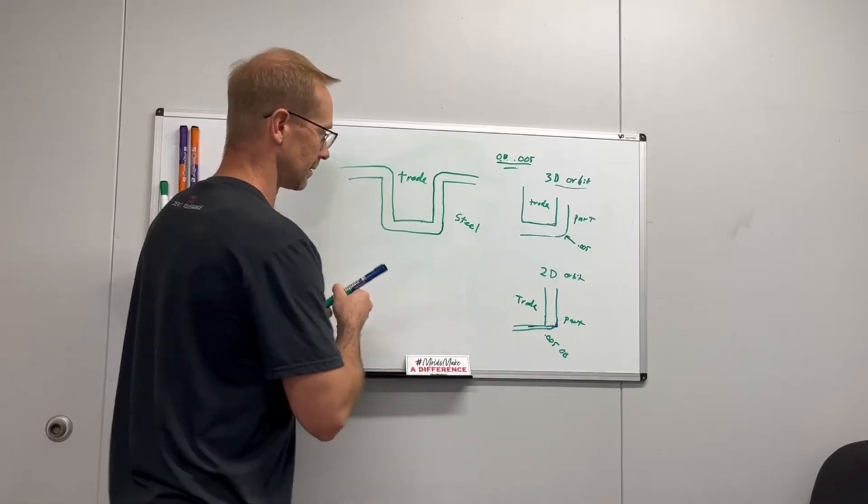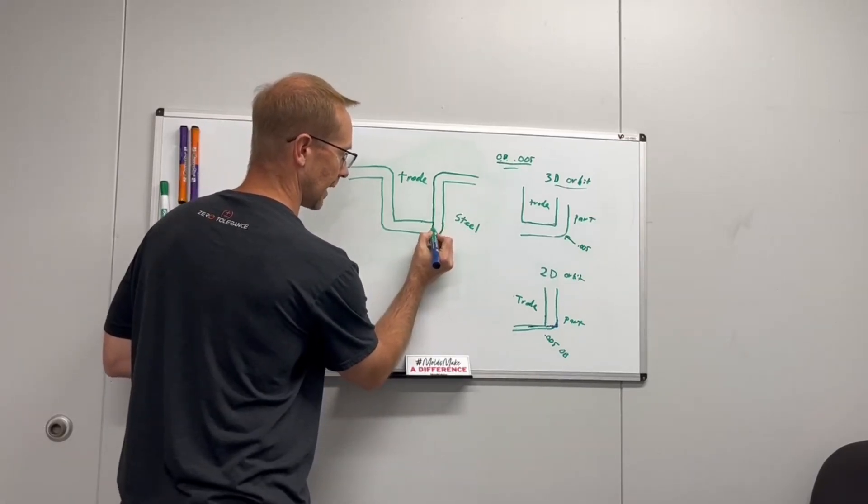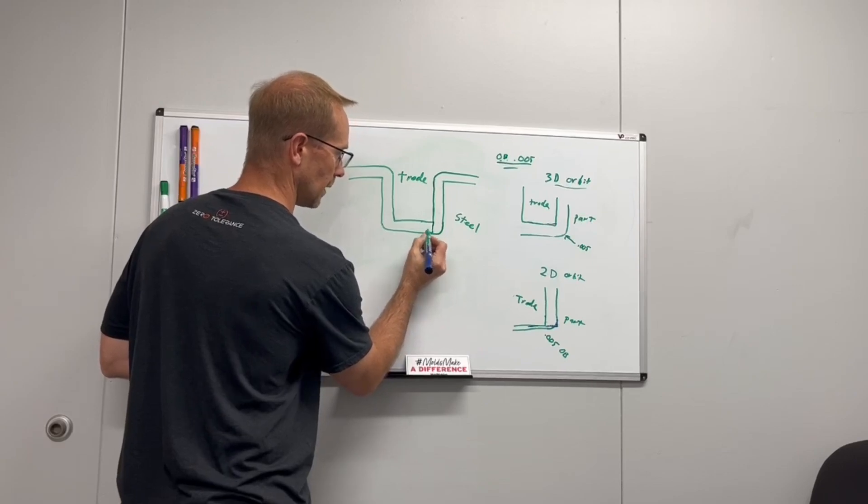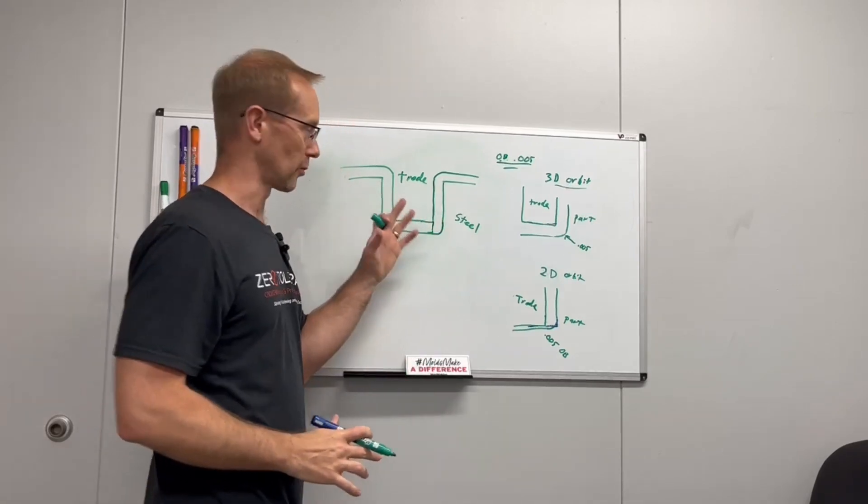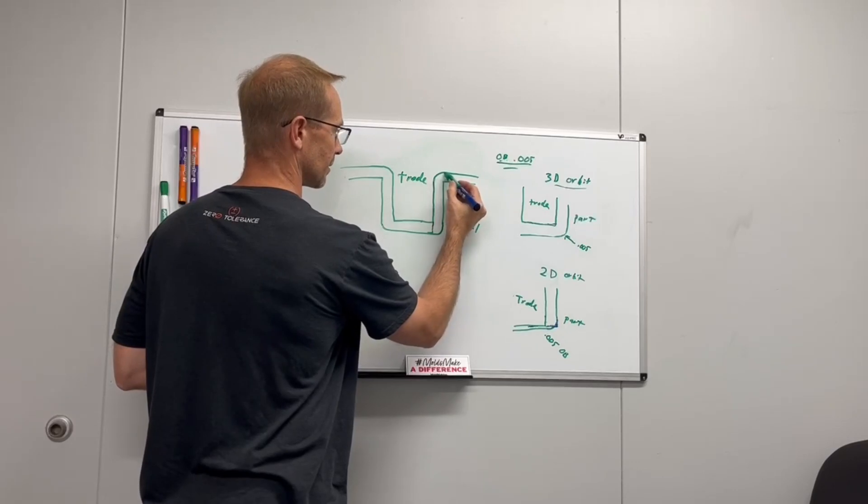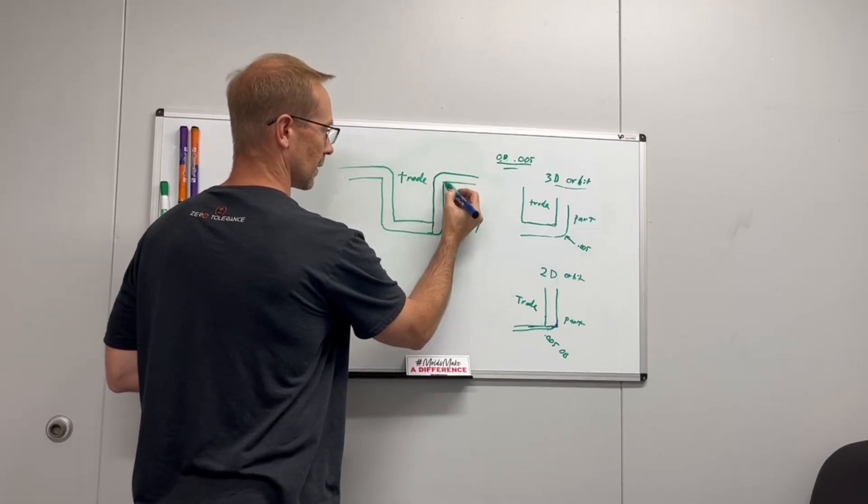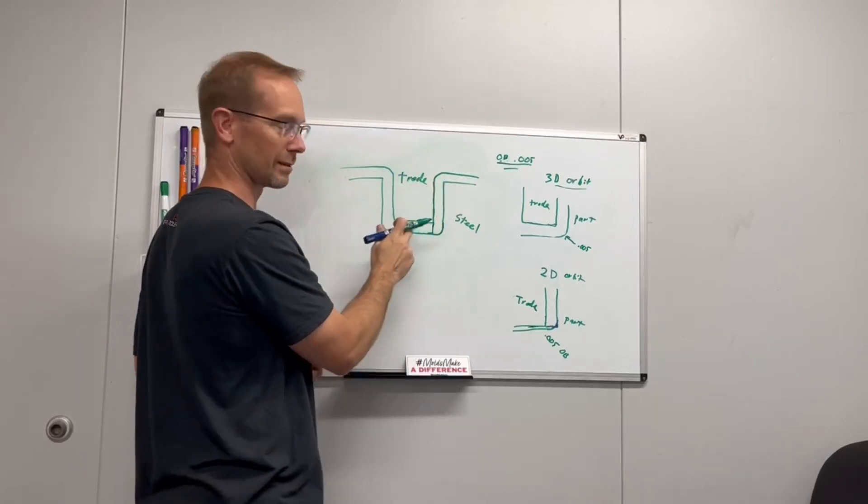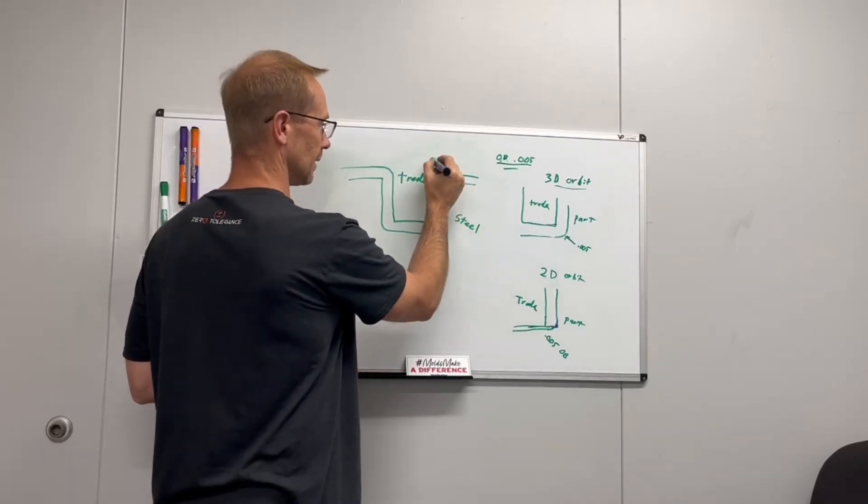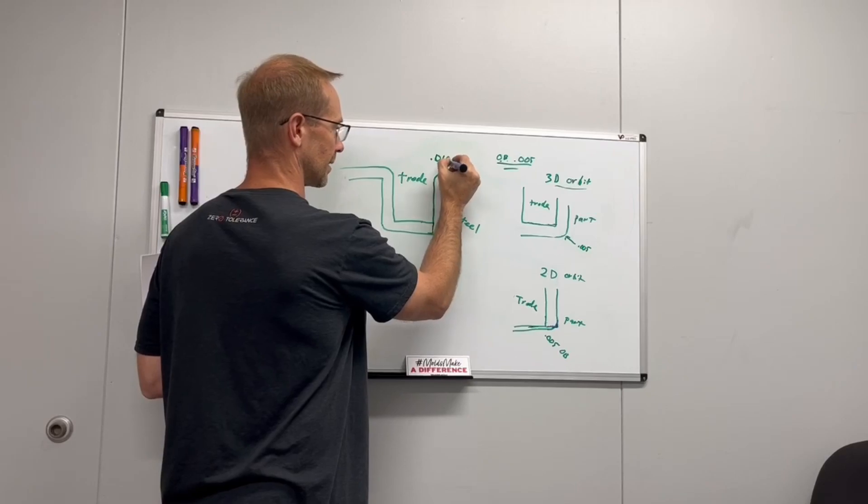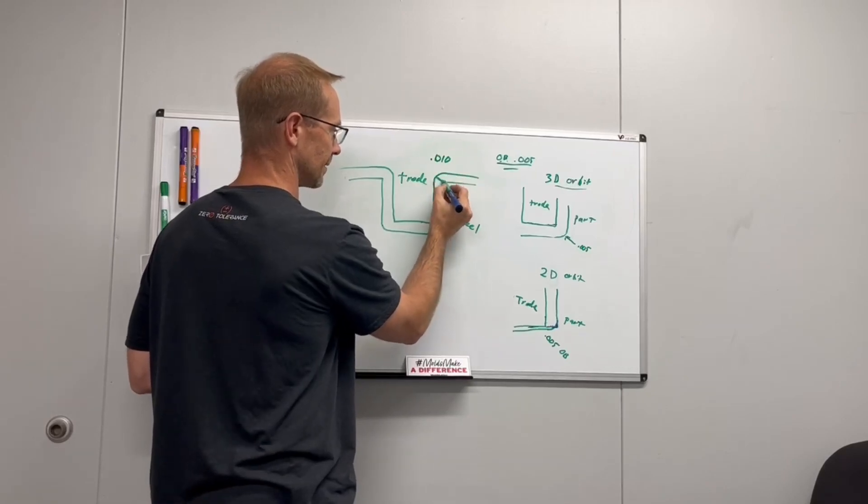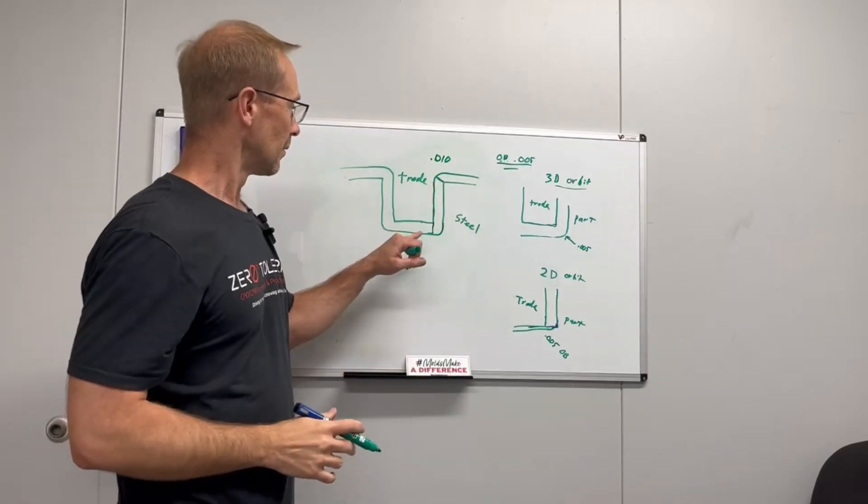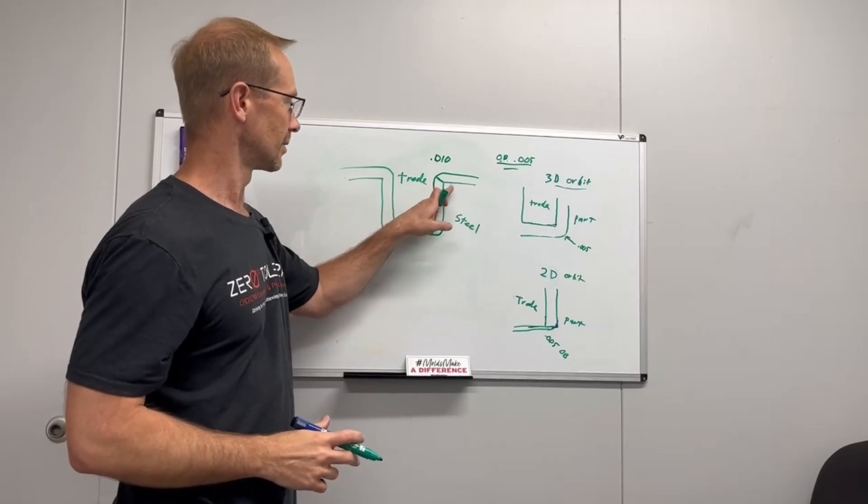And what happens is this trode comes down in 2D orbit, and I have my electrode cut for 3D, which means I have this perfectly offset sharp steel radius trode offset. Let's say for this example, it's a 10,000 overburn, and that distance is 10,000ths. Then with 3D, this is going to turn out correctly.